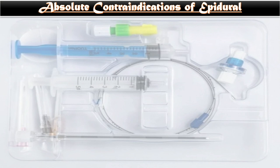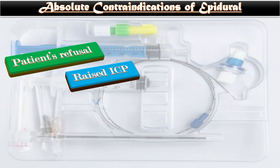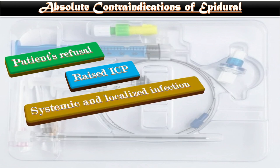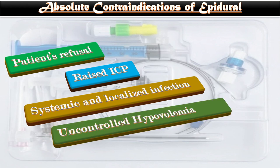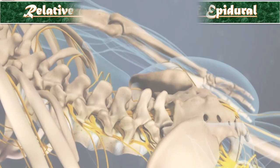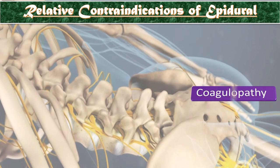What are the absolute contraindications of epidural analgesia? These include: first, patient's refusal; second, raised intracranial pressure; third, systemic and localized infection; fourth, uncontrolled hypovolemia; and fifth, localized deformity of the spine.